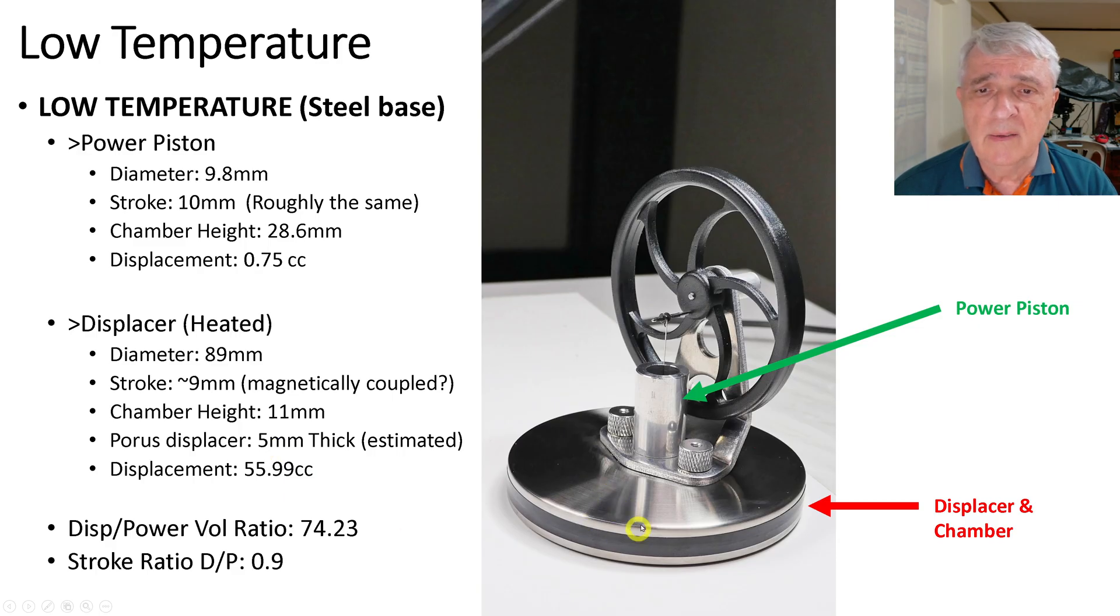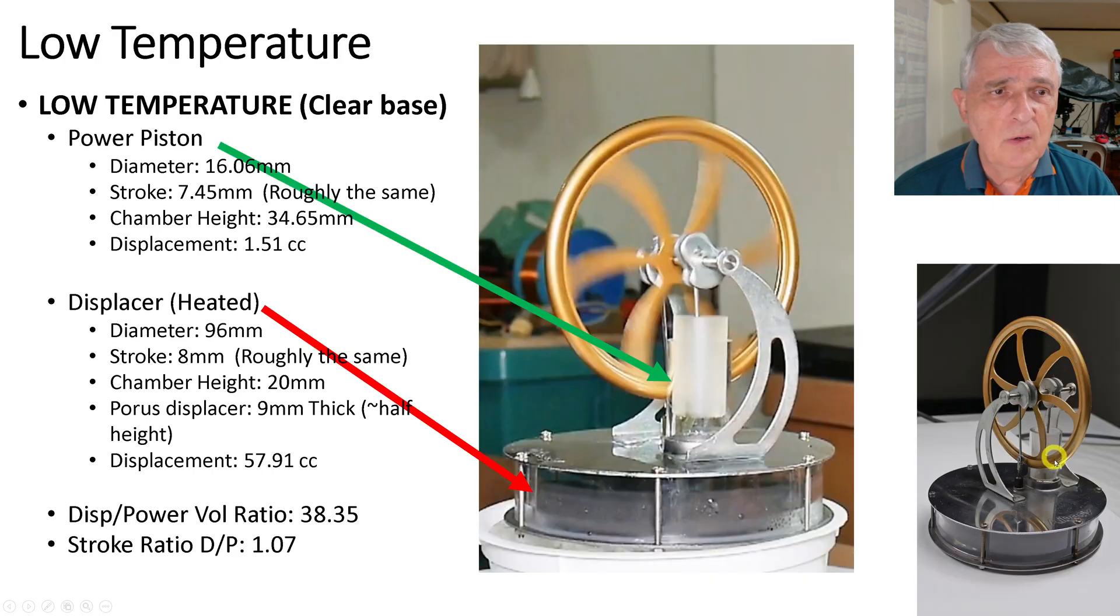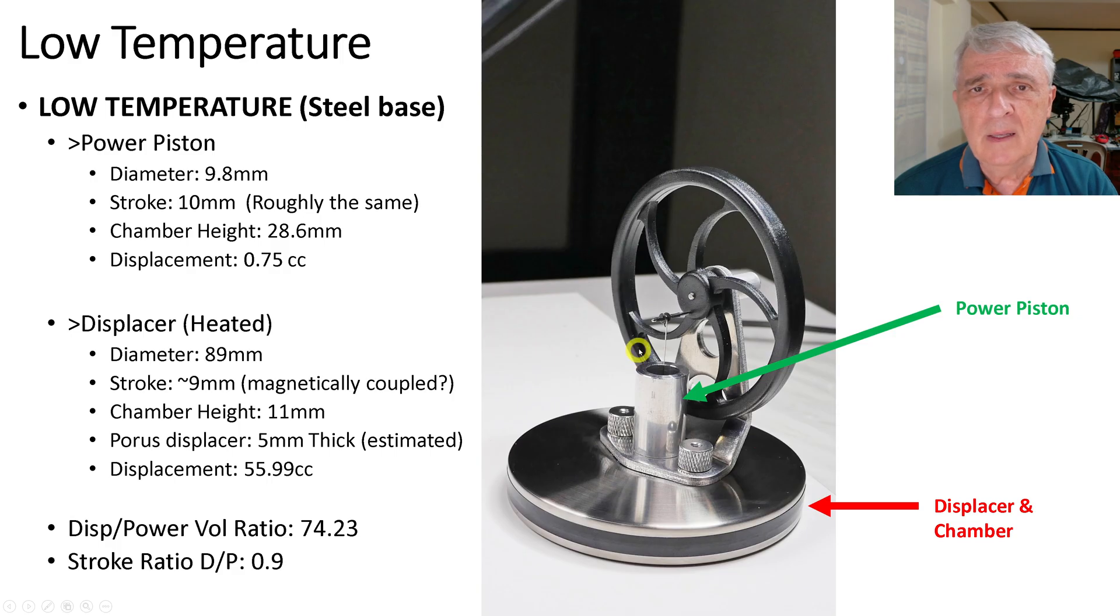Now, the displacer, which again is the heated section down here, the diameter is 89 millimeters across this way. The stroke is 9 millimeters. However, this one is magnetically coupled, and so that may change. I cannot see what's going on in here. It's hidden because it's obviously not clear. The other one is glass, so it helped me. I believe these are magnetically coupled. The power piston and the displacer piston are on the same rod because there's only one. In the last one, we had two rods. The chamber height on the displacer is 11 millimeters. The displacer internally is 5 millimeters. The total displacement is about 56 cubic centimeters.